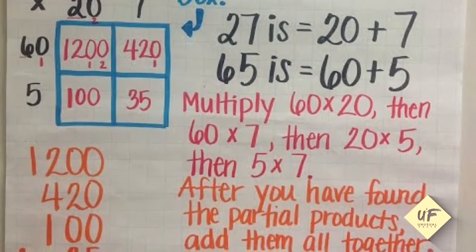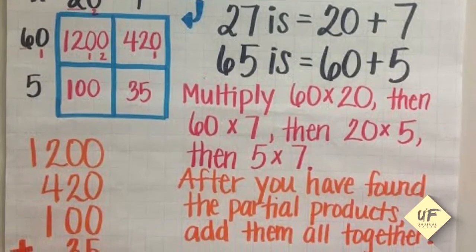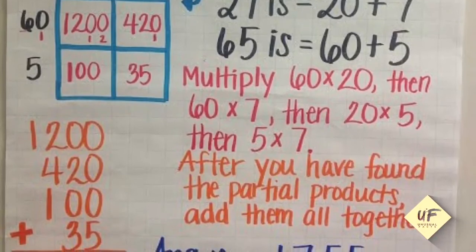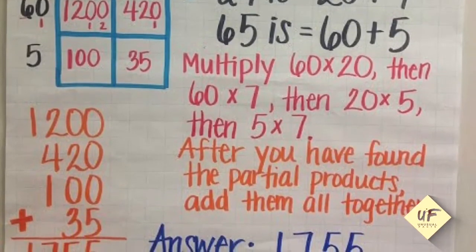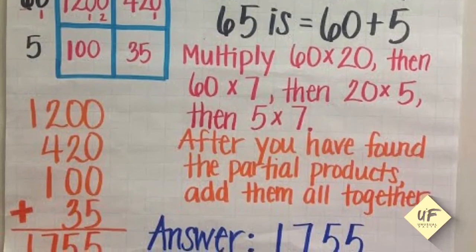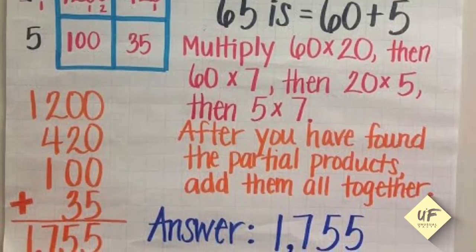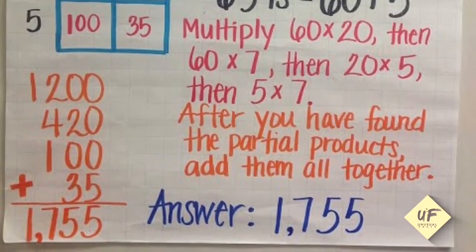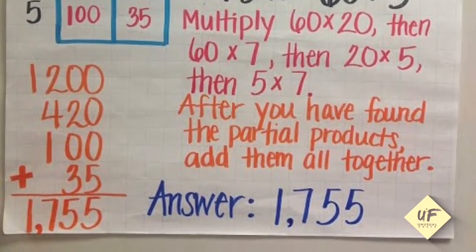So 60 times 20 is 1,200, 60 times seven is 420, 20 times five is 100, and five times seven is 35. When you add them all up, the answer is 1,755. An easy way to break it down and put it together.